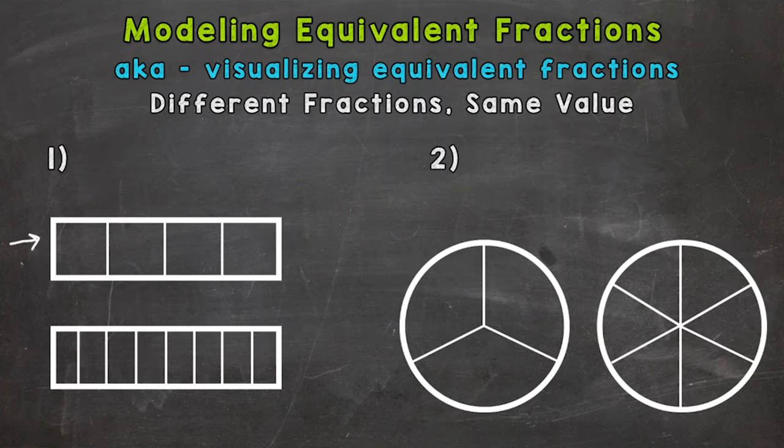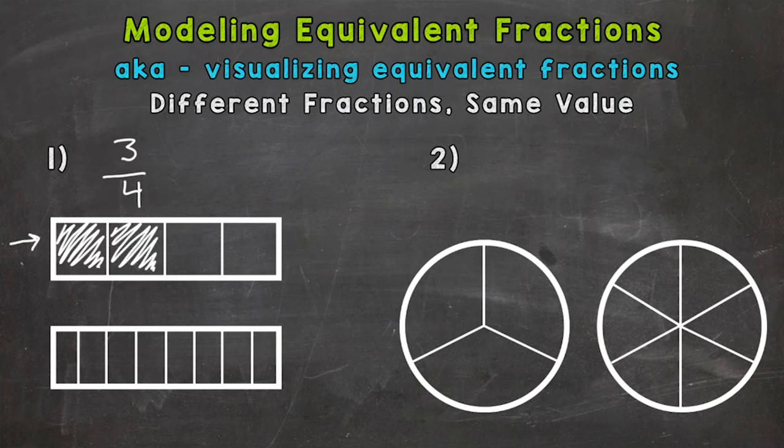The top rectangle is cut into fourths, and the fraction we're going to start with is three-fourths. So let's model three-fourths. This would be one-fourth, two-fourths, and finally three-fourths. So that top rectangle represents three-fourths.